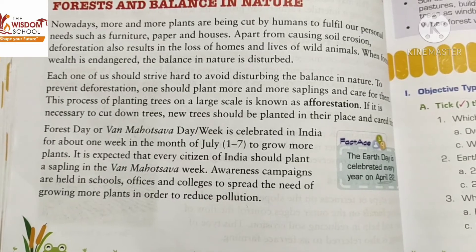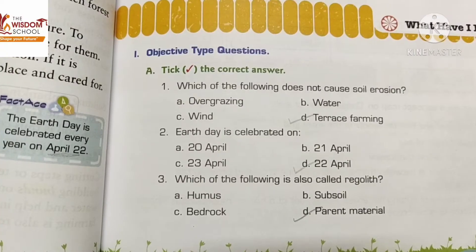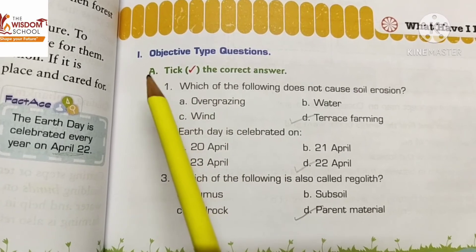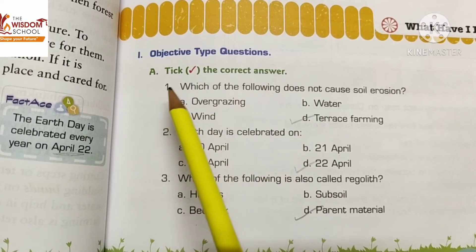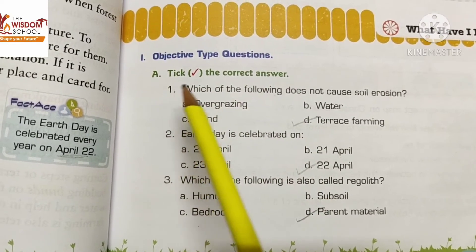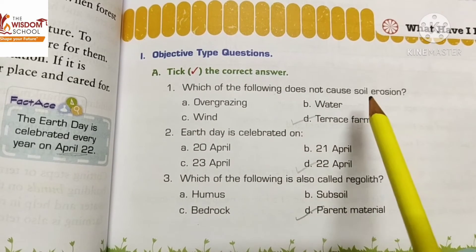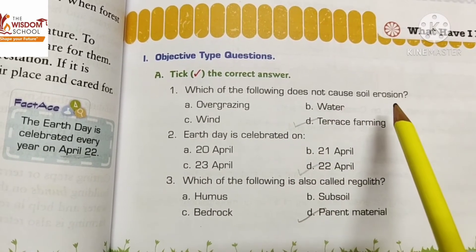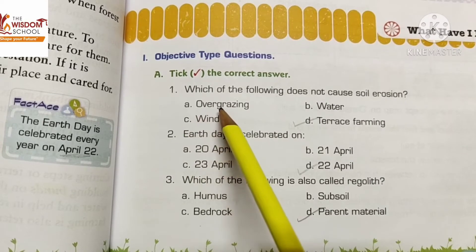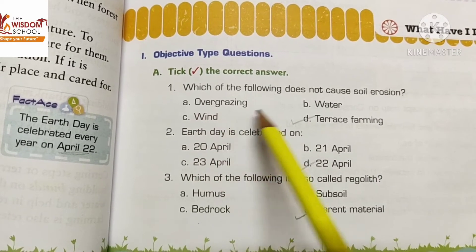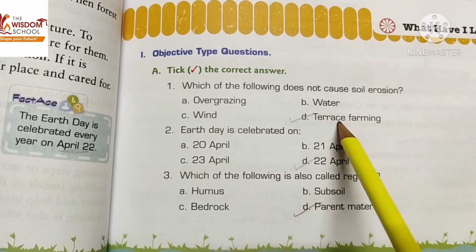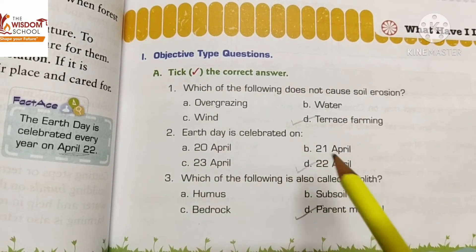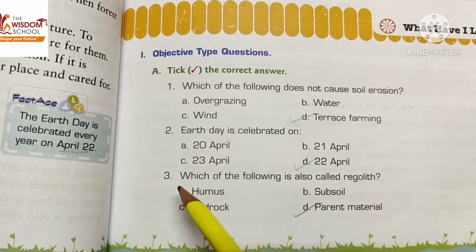Now students, we are going to do book work. Part A: take the correct answer. First question: which of the following does not cause soil erosion — overgrazing, wind, water, or terrace farming? The answer is terrace farming.